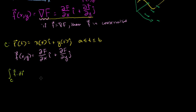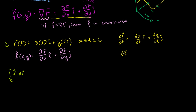Now, given this, what is f dot dr going to equal over this path? We need to figure out what dr is. We know that dr/dt = (dx/dt)·i + (dy/dt)·j, so multiplying both sides by dt gives dr = (dx/dt)·dt·i + (dy/dt)·dt·j.